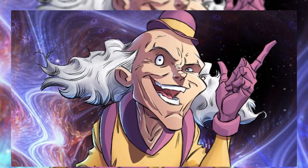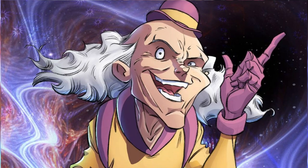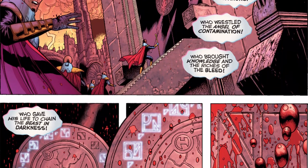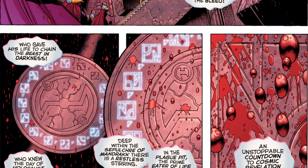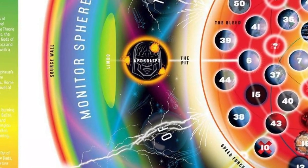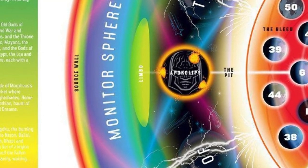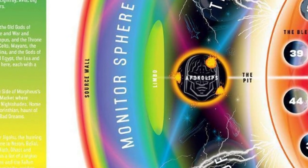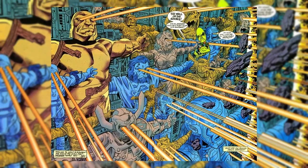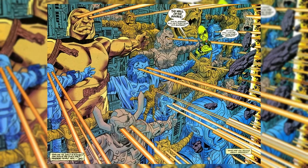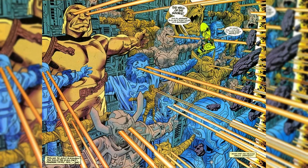Even beings of great power, such as the enigmatic fourth-dimensional entity Mr. Mxyzptlk, find themselves unable to fathom the intricacies of this realm, where time manifests as an intricate clockwork pattern across the celestial expanse. At the outermost reaches of the DC multiverse stands the formidable Source Wall — an insurmountable divide marking the boundary between existence and non-existence. Along this impenetrable wall, the Promethean Giants stand as towering frozen statues bearing witness to fallen gods and cosmic entities who dared to challenge the limits of the wall, meeting their eternal fate as part of its structure.